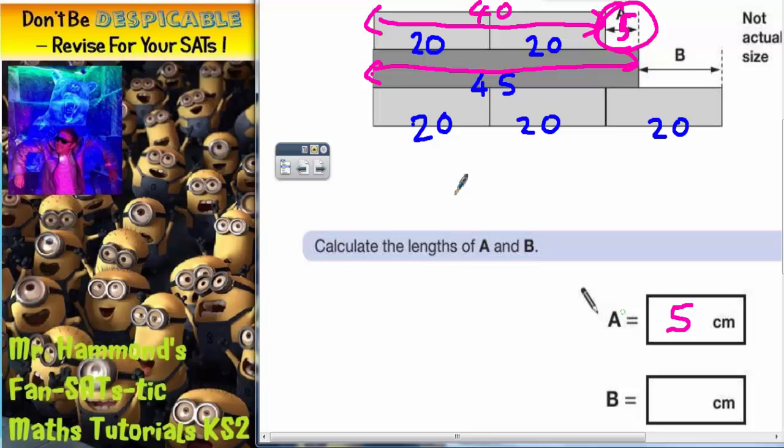What about B? Well, this distance is my three 20s put together, so 20, 40, 60. So those three together make 60, but I know that the dark grey one is 45. So this extra bit, 45 plus the extra bit, is the whole length which we now know is 60.